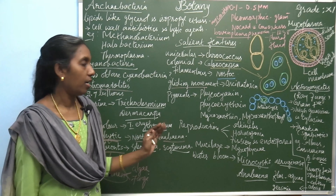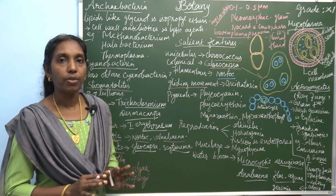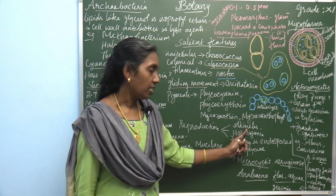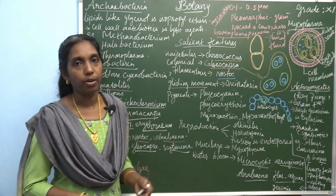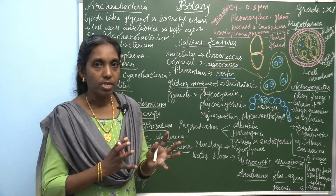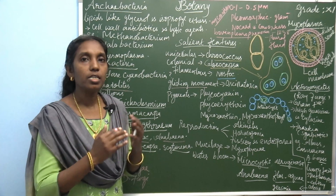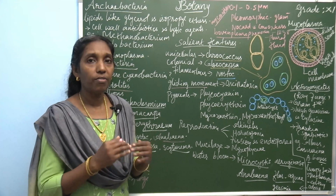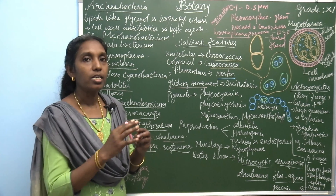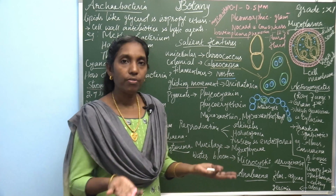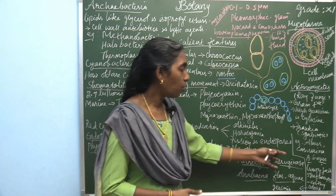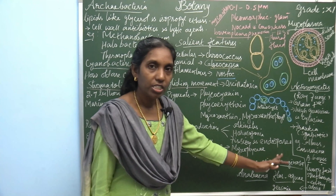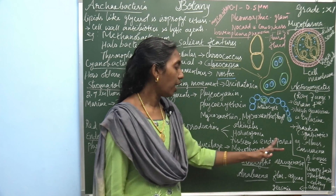Reproduction in cyanobacteria occurs only by vegetative methods; sexual reproduction is absent. The common vegetative methods are akinete formation, hormogonia formation, fission, and endospore formation. Akinetes are thick-walled vegetative cells. In hormogonia, filamentous algae undergo cell division. Endospores form and develop into new organisms when conditions are favorable.